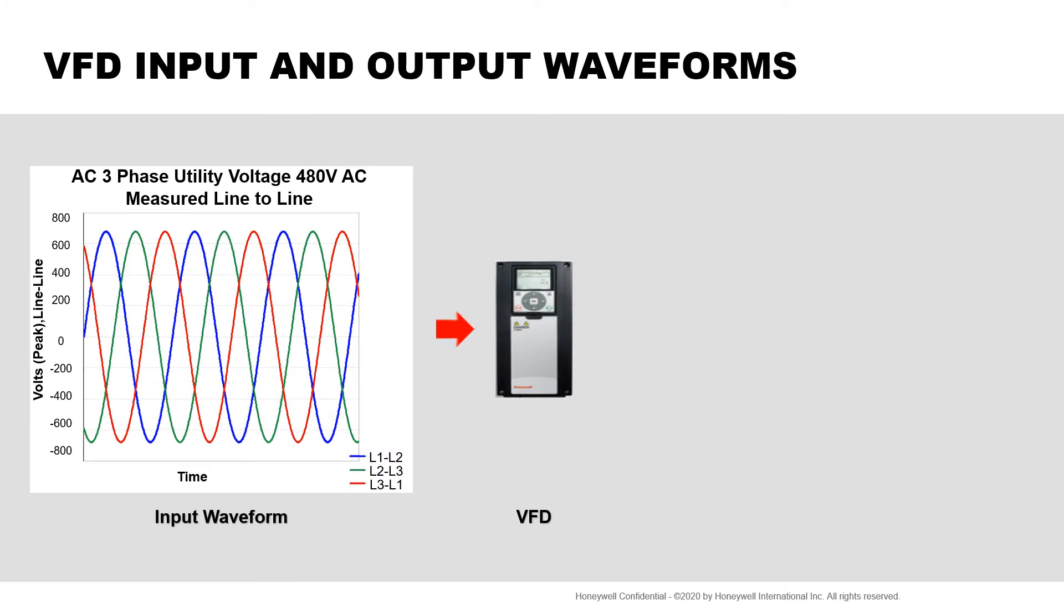This is a picture of a three-phase alternating current AC sine wave. You can see how each of the three phases are alternating positive and negative, and you can see how the phases are staggered, so they are 120 degrees apart.